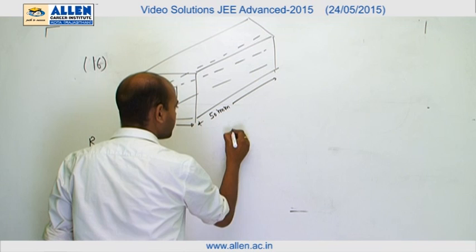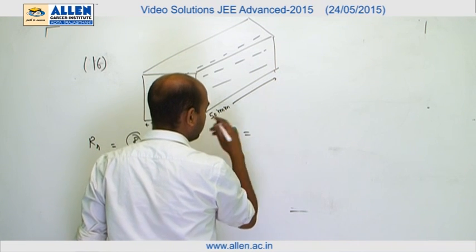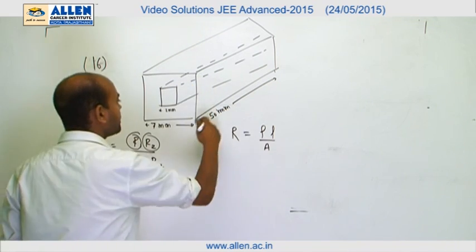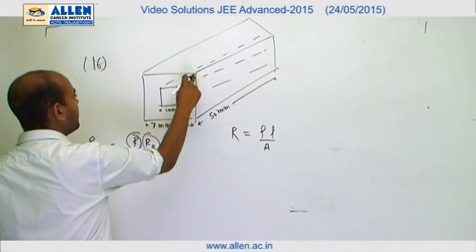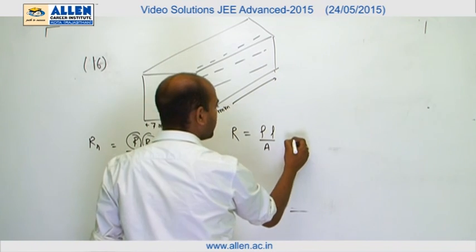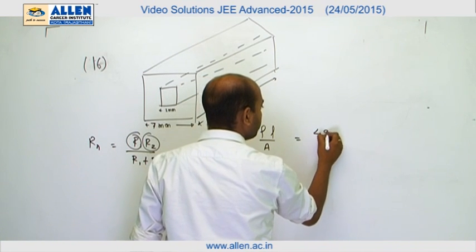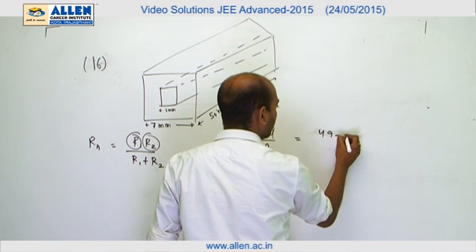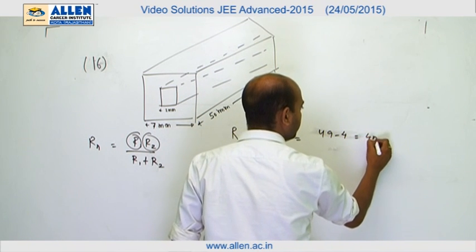First we consider the aluminum, the bigger one. The resistance of any conductor is given as rho L by A. Length is 50 mm and area of the aluminum is the bigger area minus smaller area, which comes out to 49 minus 4, which is 45 mm squared.